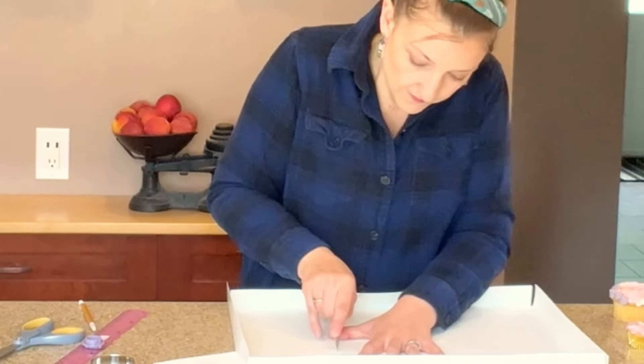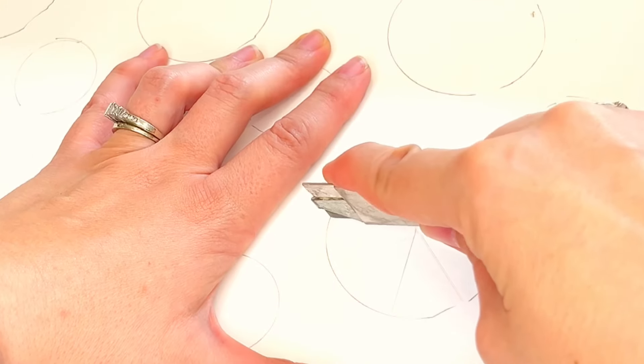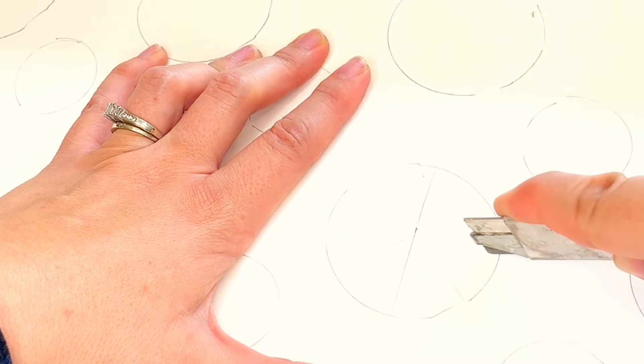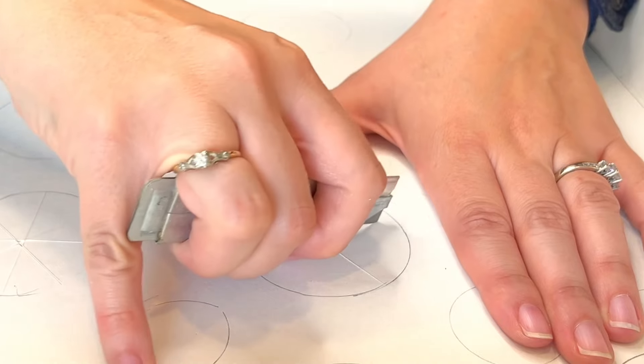Now using something like an exacto knife, I'm going to cut about four slashes through the center of each circle. Make sure to press hard enough so that the holes will open up when you put the cupcakes in.